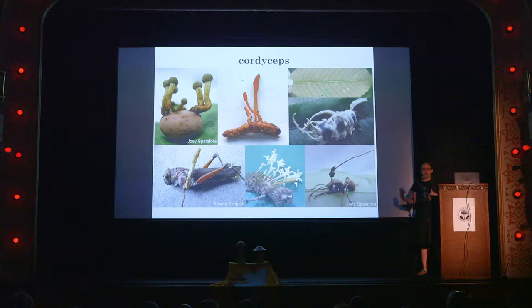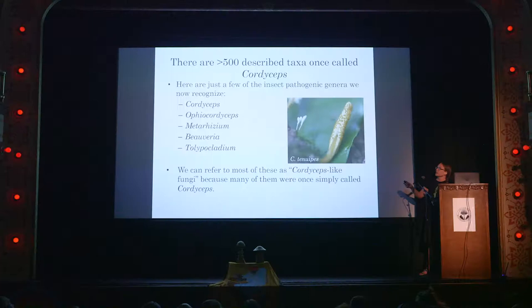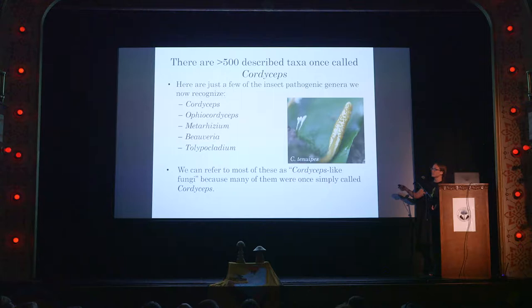Cordyceps were almost exclusively known as insect or spider pathogens, with some exceptions being some mycoparasites — fungi infecting other fungi. This is actually a truffle you're looking at here, and the cordyceps are fruiting out of that truffle. There are more than 500 described species; it's incredibly diverse. When people think of cordyceps, sometimes they think there's just the ant pathogen, but actually it's just this incredibly diverse group of over 500 described species, more being described every year.